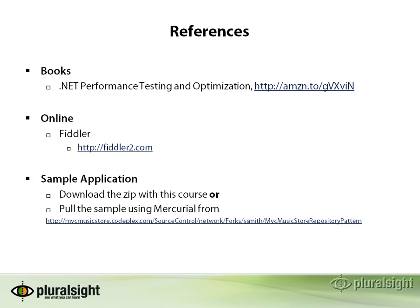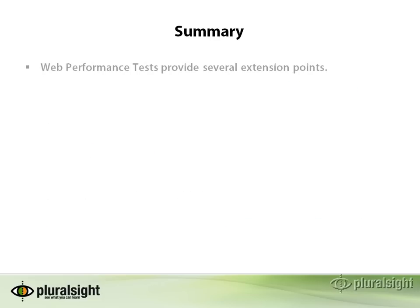Shown at the URL below, you can grab this using Mercurial and actually see all of the different check-ins and check-in history that goes along with the application. To summarize, there are a number of different extension points for web performance tests.